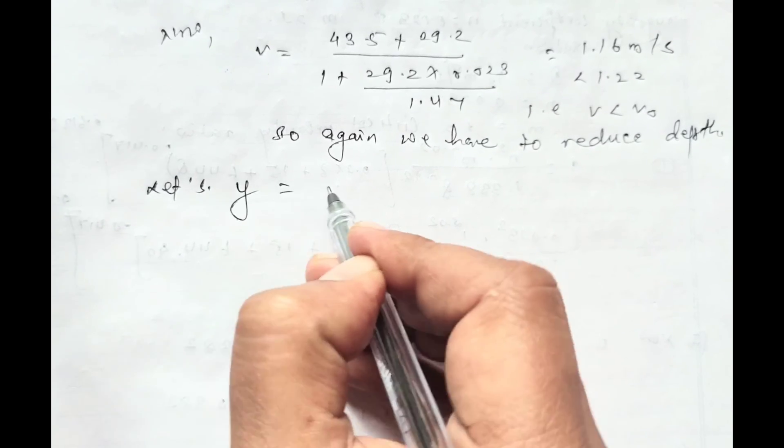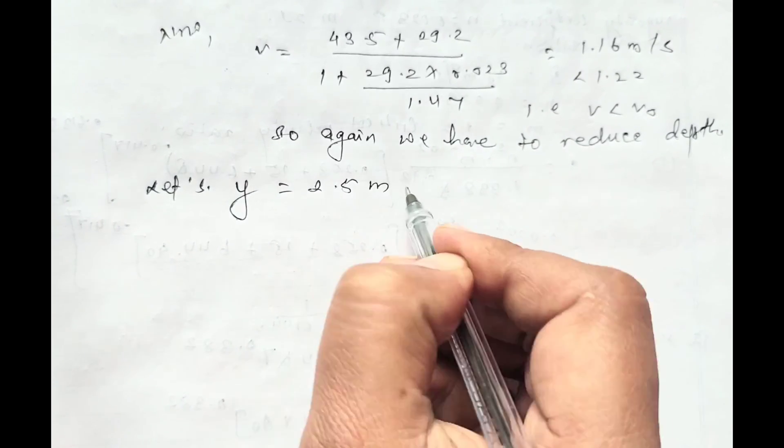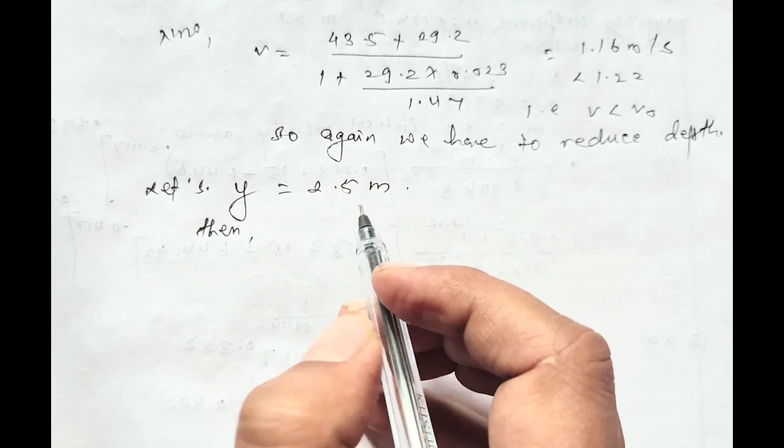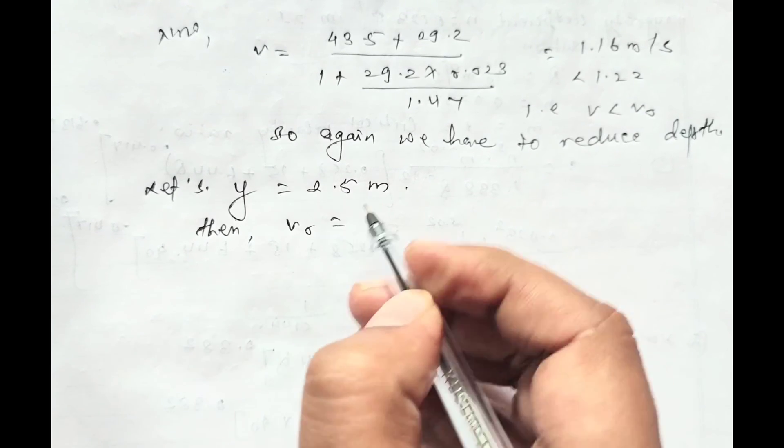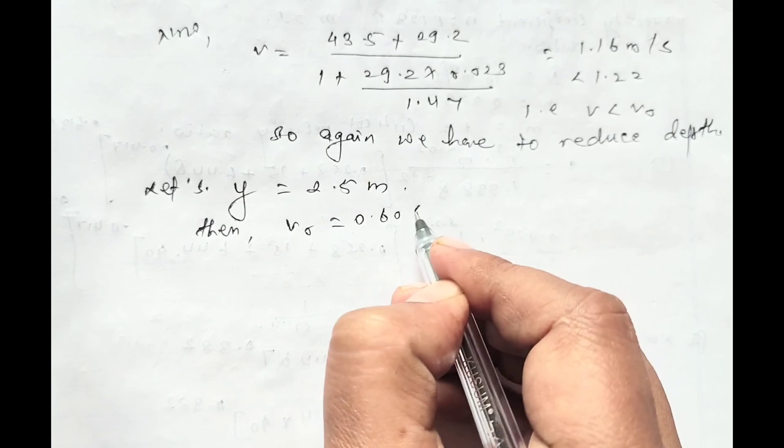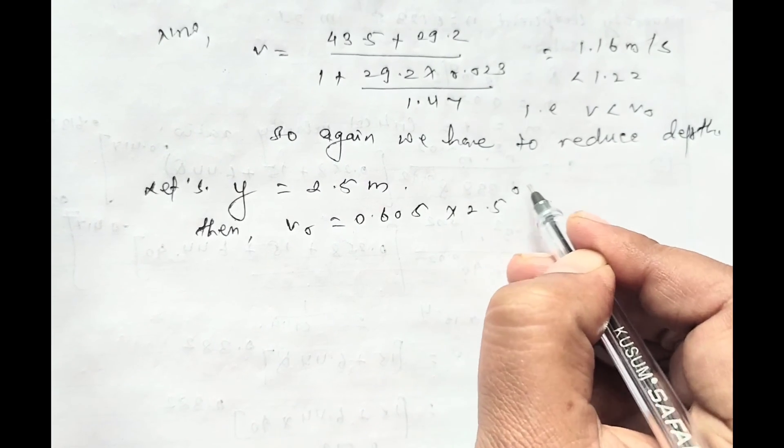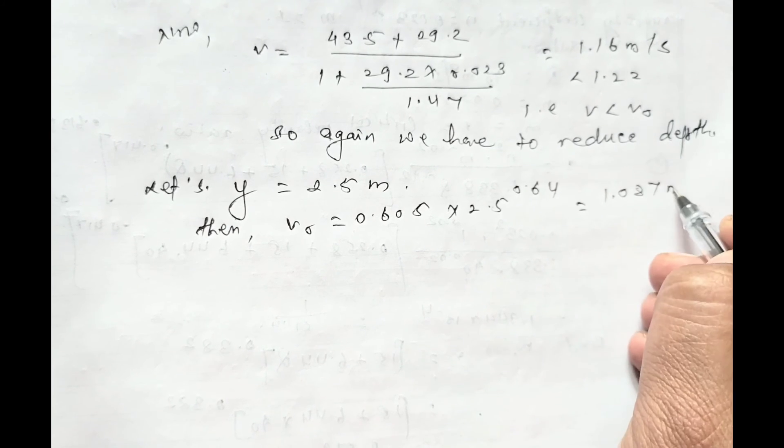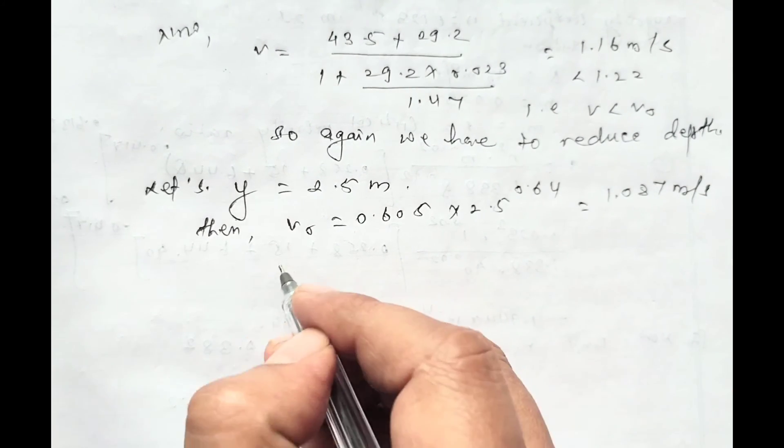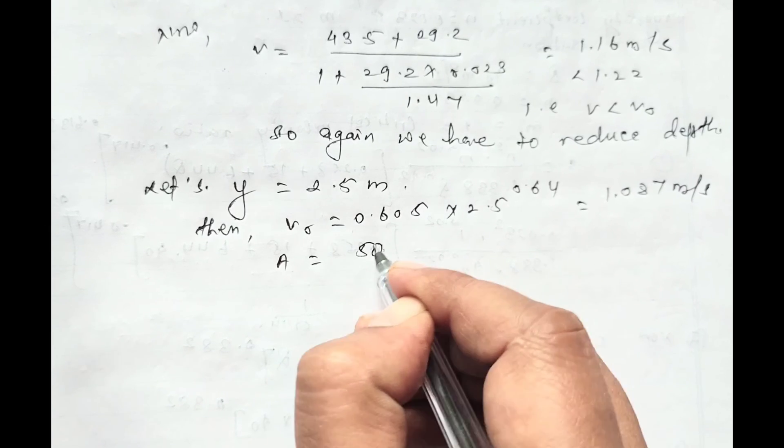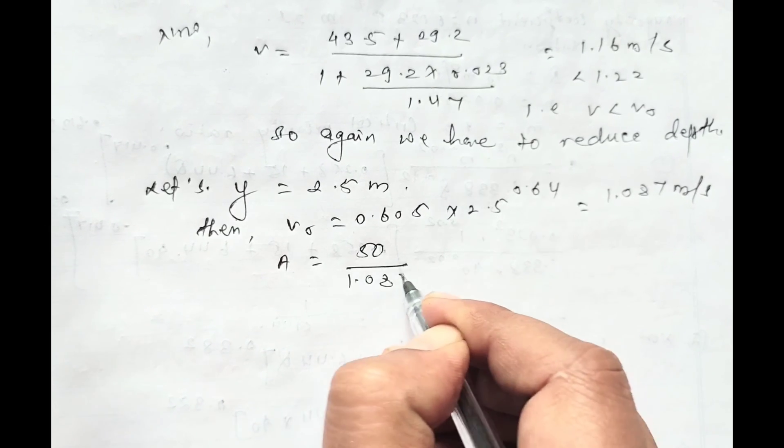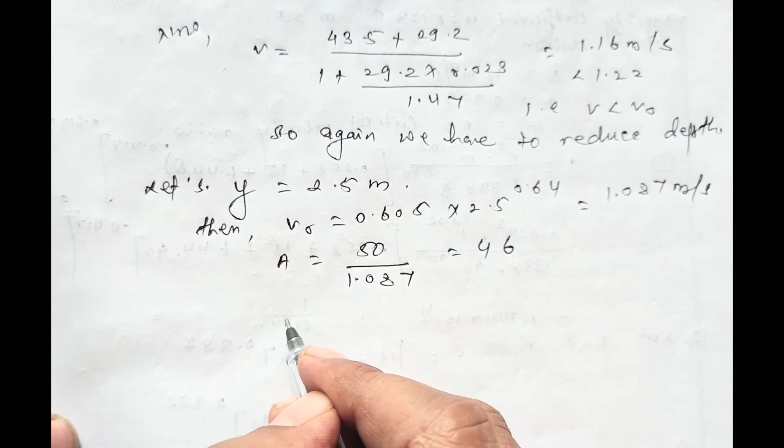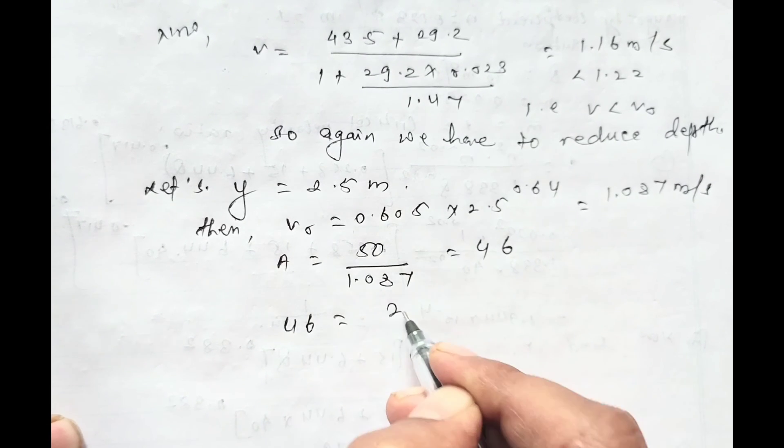Let's take y equals 2.5 meter. Then again we have to repeat the process in our previous way. V₀ equals 0.605 × 2.5^0.64, and area equals 50 divided by 1.0877 equals 46.